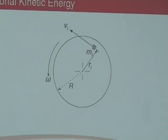Now let's look at another spinning disk and look at rotational kinetic energy. I've got this disk with a little element of mass mᵢ — the disk has total mass M. If we look at the tangential velocity of that element it's travelling at vᵢ. The radius from the centre to that element is rᵢ, and the disk is spinning at ω radians per second.